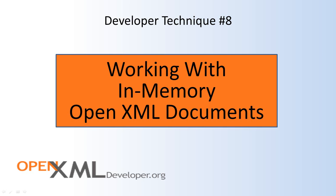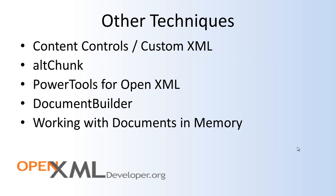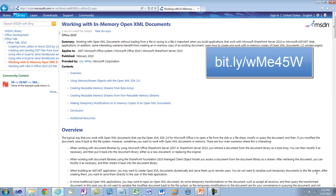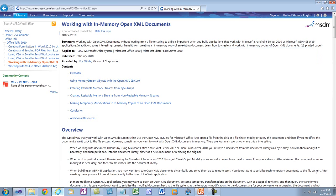Another fairly trivial but nevertheless important technique involves working with OpenXML documents in memory. Using these techniques, you can fabricate new OpenXML documents in memory, modify OpenXML documents in memory, or take a template document, copy it, modify it, and then save it. Here you can find an MSDN article that talks through the various issues around working with in-memory OpenXML documents.